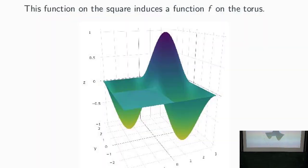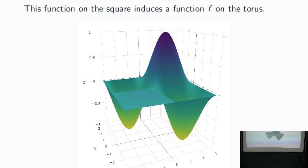Now I want to carefully work through one example. Here we have a simple function on the square — just a product of sine functions in each coordinate — and to make it more interesting I've dampened the values in one of the quadrants. We have two global minima at minus one, one global maximum at one, and another local max at 0.1.